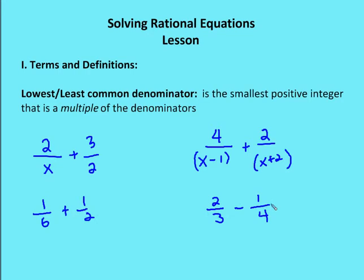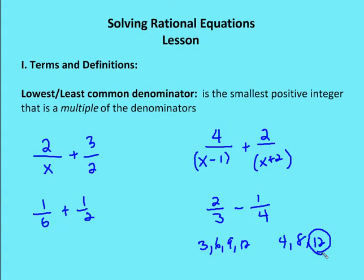In my second expression, 2 over 3 minus 1 over 4, I need to find the smallest positive integer that is a multiple of the denominators. Multiples of 3 are: 3, 6, 9, 12. And multiples of 4 are: 4, 8, 12. So 12 is going to be the smallest positive integer that is a multiple of both denominators. So my lowest common denominator for this expression is 12.